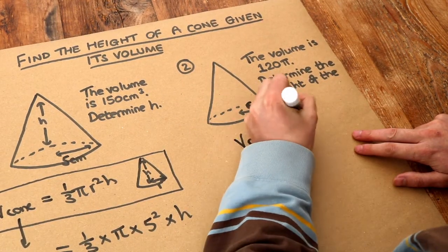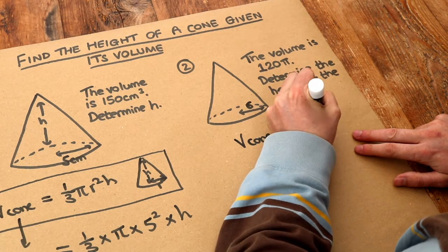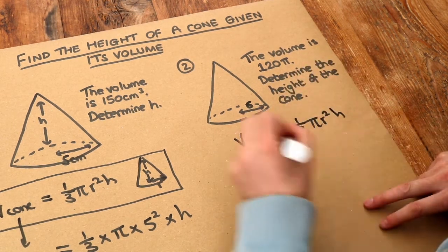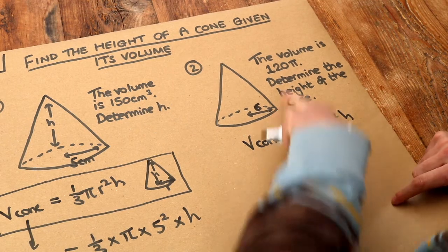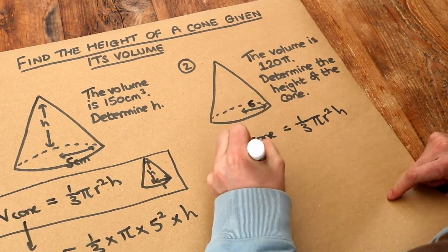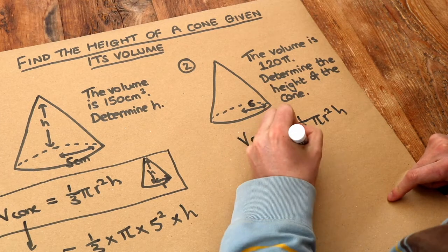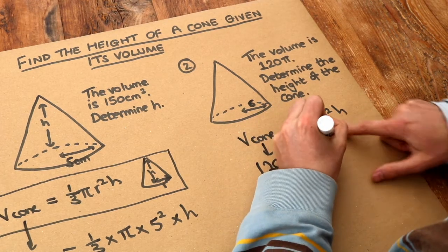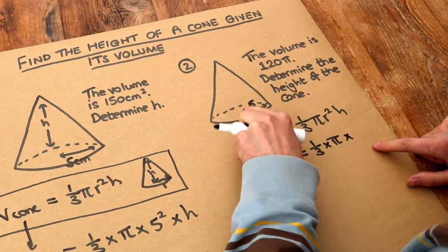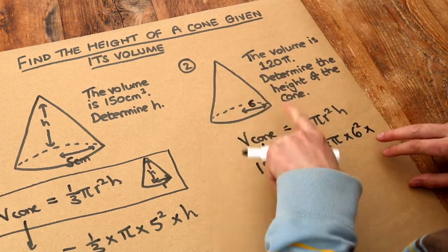But let's do what we had before. We have the volume of the cone is a third pi r squared h, and we want to substitute each thing we know into it. So the volume we know this time is 120 pi, is equal to a third times pi times the radius squared, so six squared, multiplied by the height which we don't know, let's call it h.